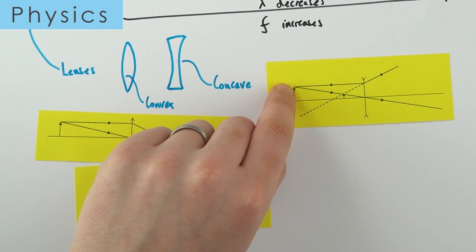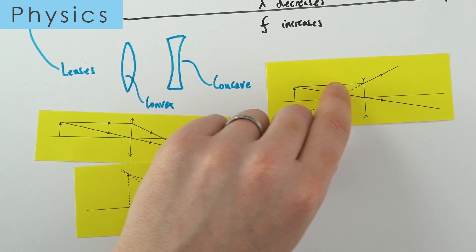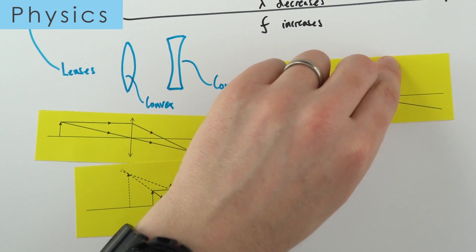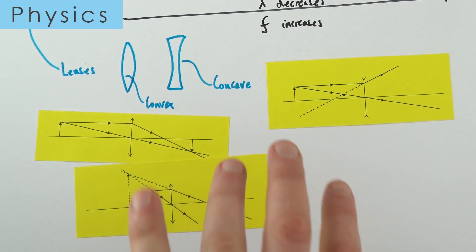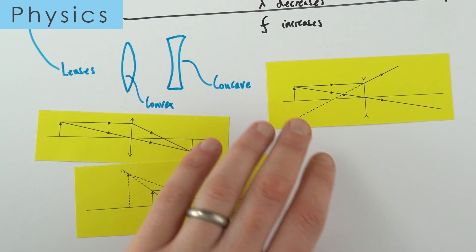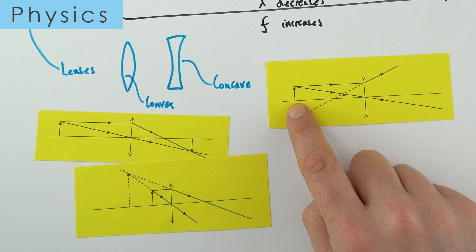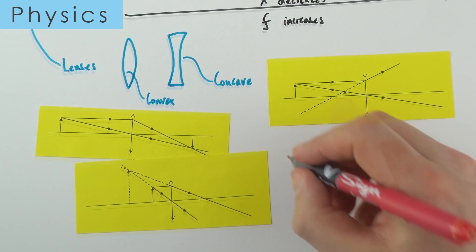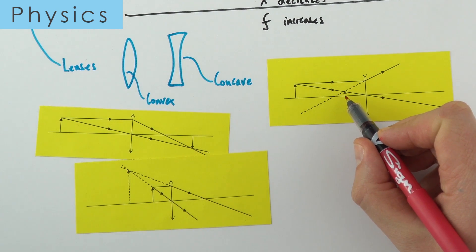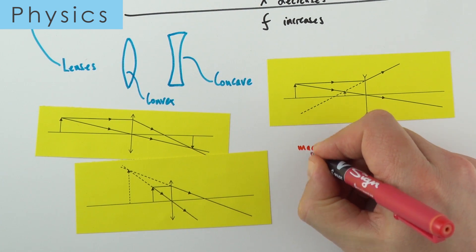With your concave lens, if this is our object over here, the ray of light when it goes through the lens bends away from this principal axis. When you have a concave lens, the image that we see is smaller and it's a virtual image. We can look at how the image size compares to the object using magnification.